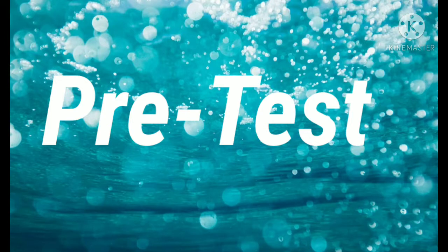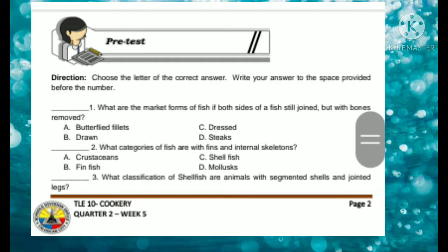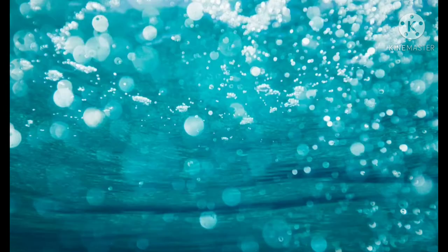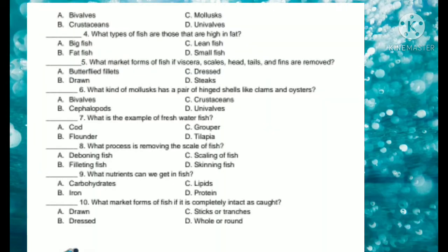But before we move on to our topic, let us answer the previous activity. Follow the direction by reading your soft copy or hard copy of your module. You may choose the letter of the correct answer and write your answer to the space provided for the number, or you may write your answer on a separate sheet of paper. If you are done with the pre-test, let us continue with Looking Back.